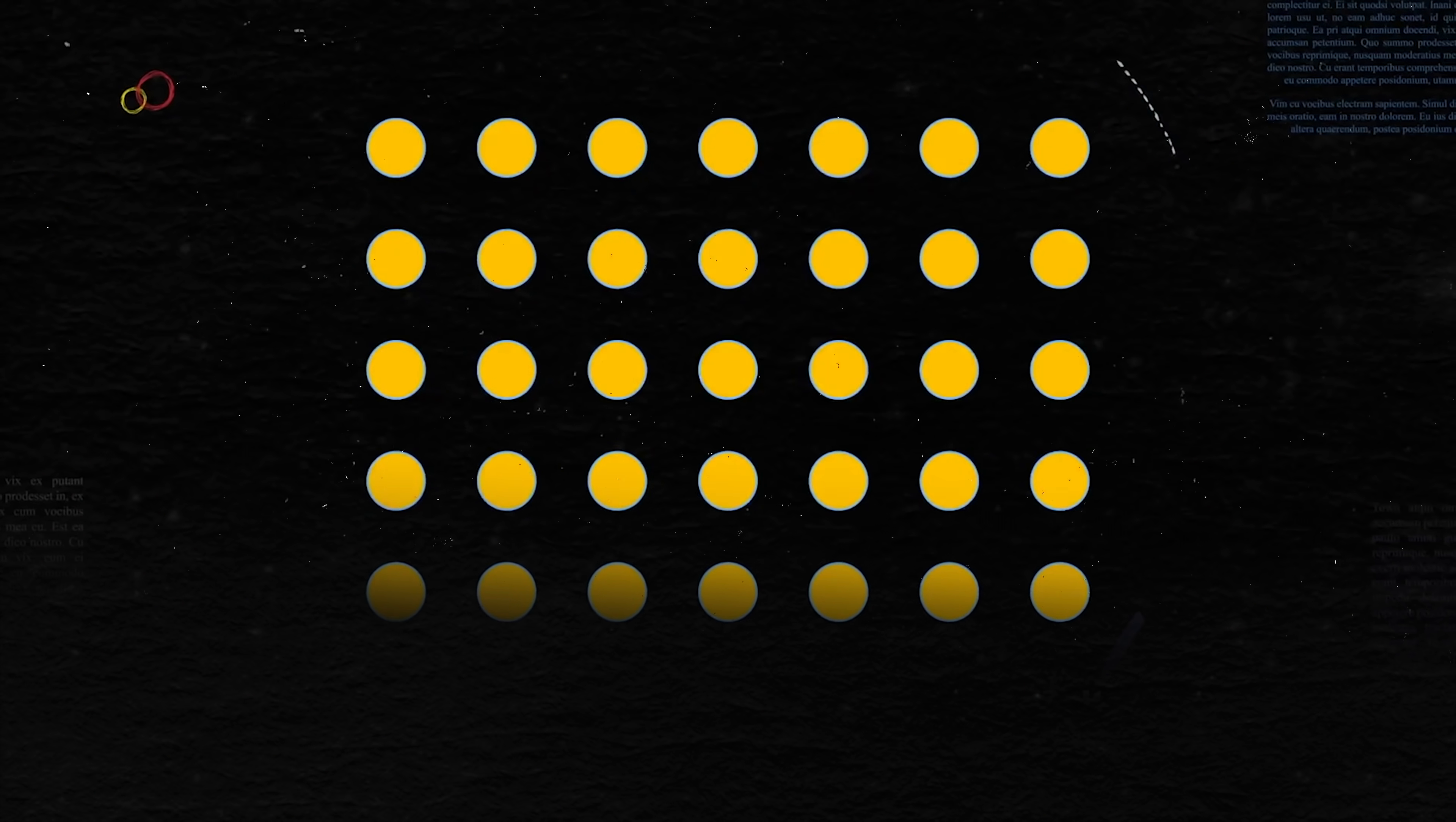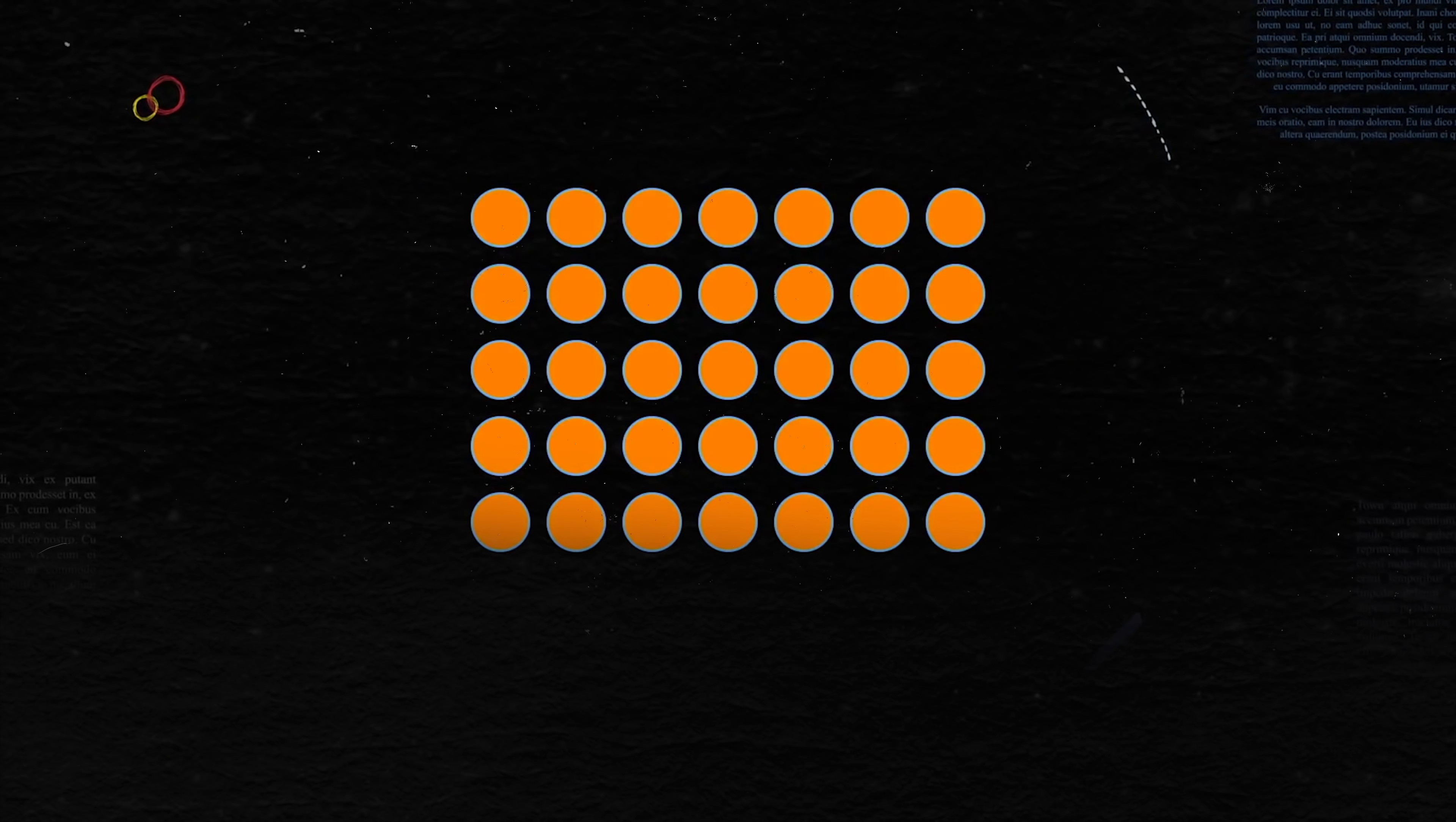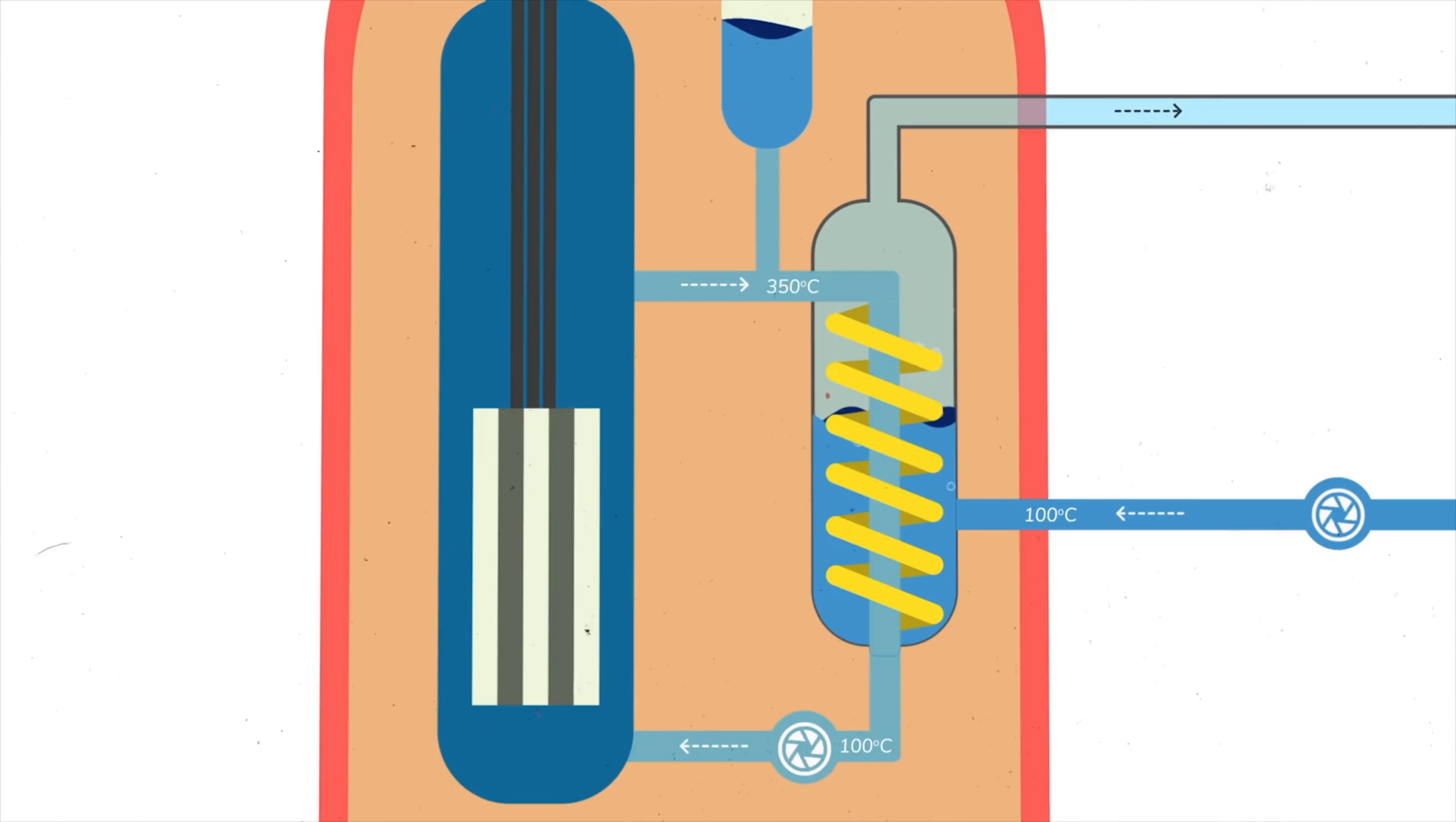A nuclear reactor needs three main things: a fissile fuel packed closely enough that it can sustain a chain reaction, a moderator that can slow down neutrons so they can cause fission, and finally, a coolant that can take the heat generated from fission to some place where it can generate electricity.